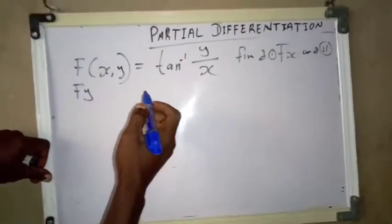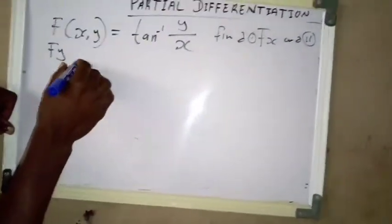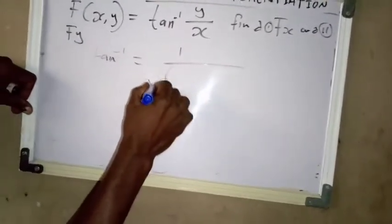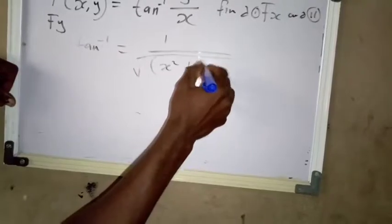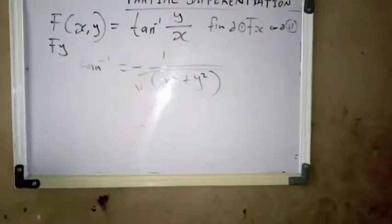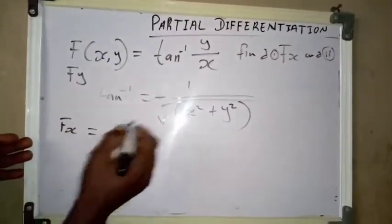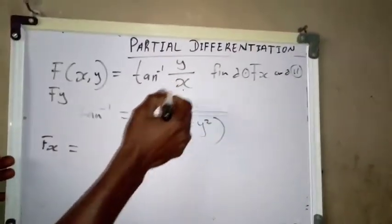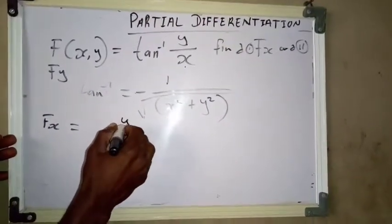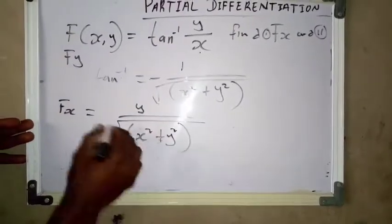Another example. To find f_x and f_y, we have a function involving arctan. The derivative of arctan equals 1 divided by the square root of x squared plus y squared. To find f_x, we replace the relevant variable. Our answer for f_x equals y divided by the square root of x squared plus y squared.